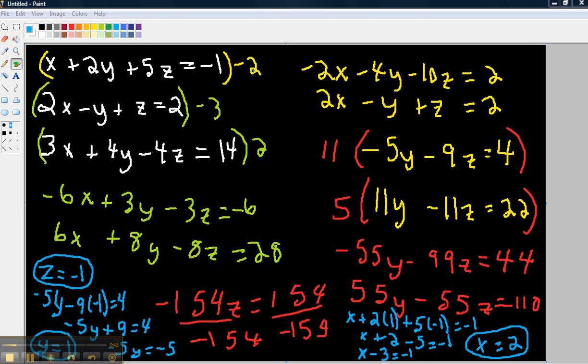And distribute negative 2 throughout the parentheses here. Well, this new equation is over here on the right, which is negative 2x minus 4y minus 10z equals 2. Then I combine these two equations. Negative 2x plus 2x is 0. Add those, negative 5y, add those, negative 9z, add those, 4.